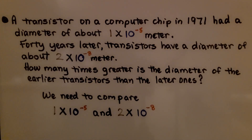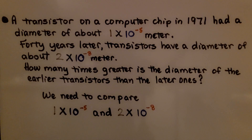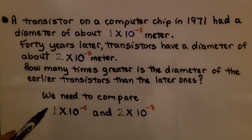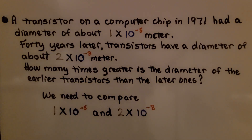A transistor on a computer chip in 1971 had a diameter of about one times ten raised to the negative fifth power meters. Forty years later, transistors have a diameter of about two times ten raised to the negative eighth meter. How many times greater is the diameter of the earlier transistors than the later ones? We need to compare one times ten to the negative fifth and two times ten to the negative eighth.